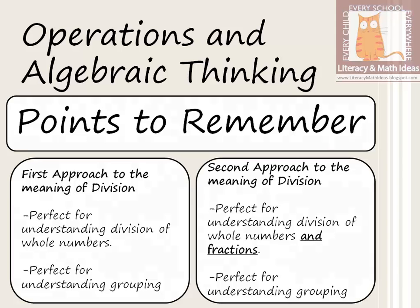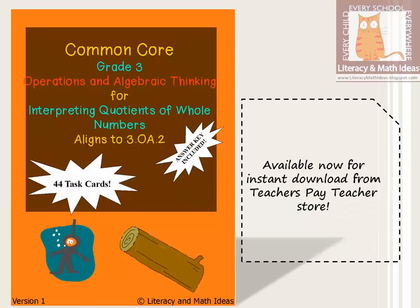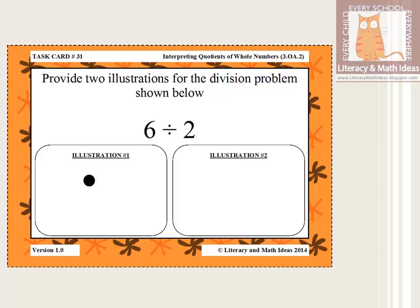With all this in mind, here at Literacy and Math Ideas we created a product called 'Interpreting Quotients of Whole Numbers.' It's a set of task cards that can be instantly printed from your computer. As any product covering Common Core Standard 3.OA.2 should, it covers both approaches to the meaning of division. In one task card, the student provides two illustrations for the division problem shown — for example, 6 divided by 2.